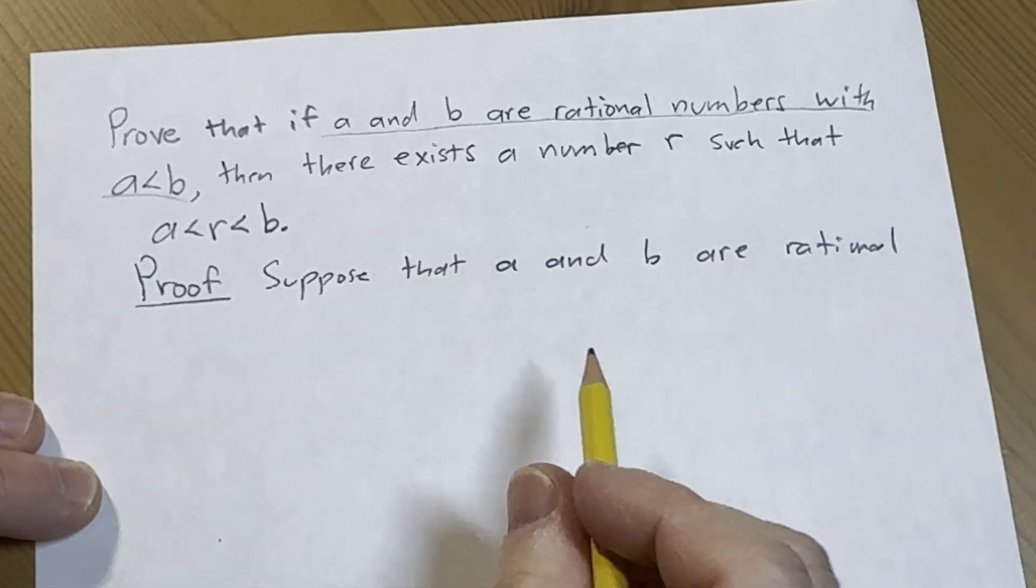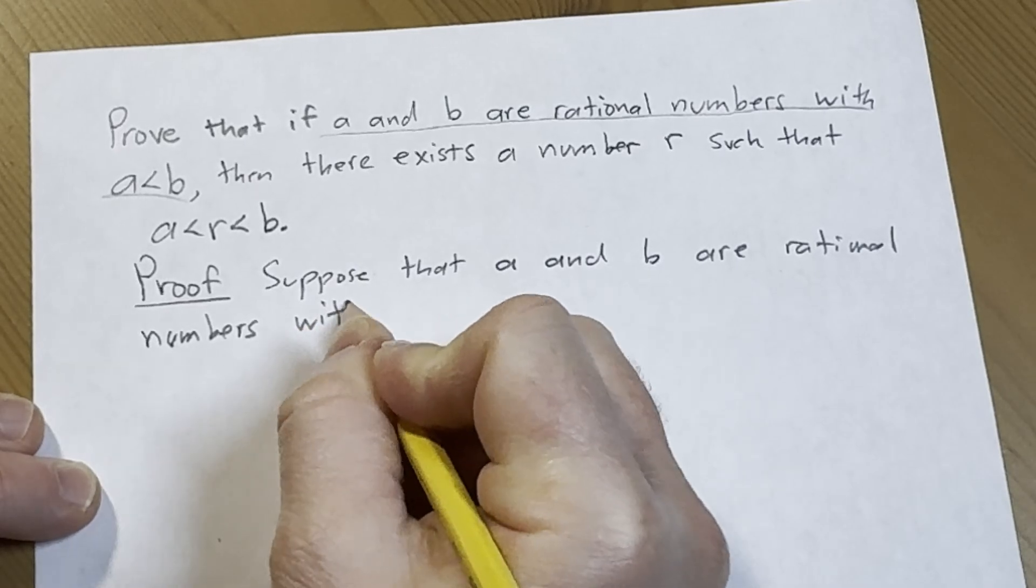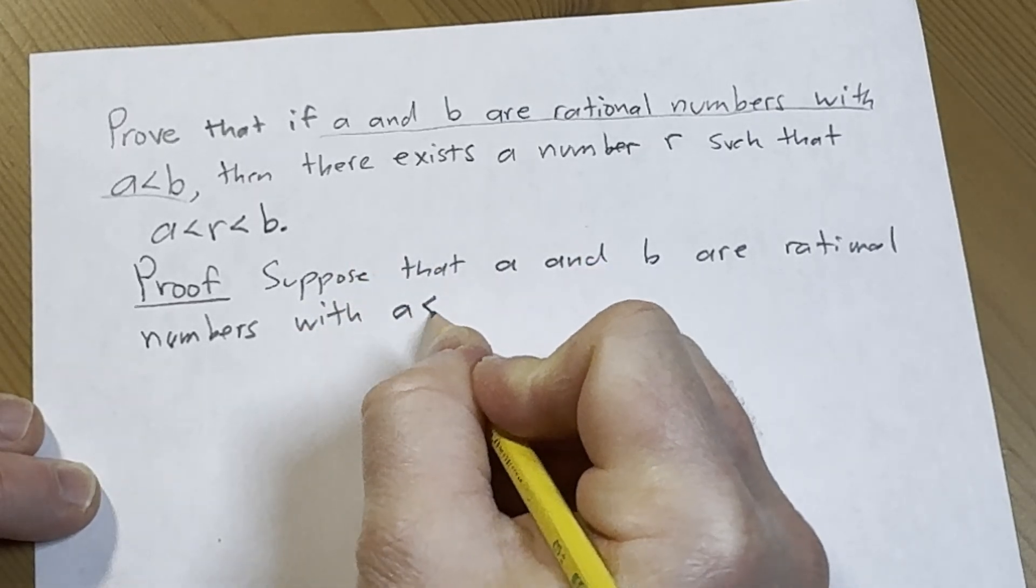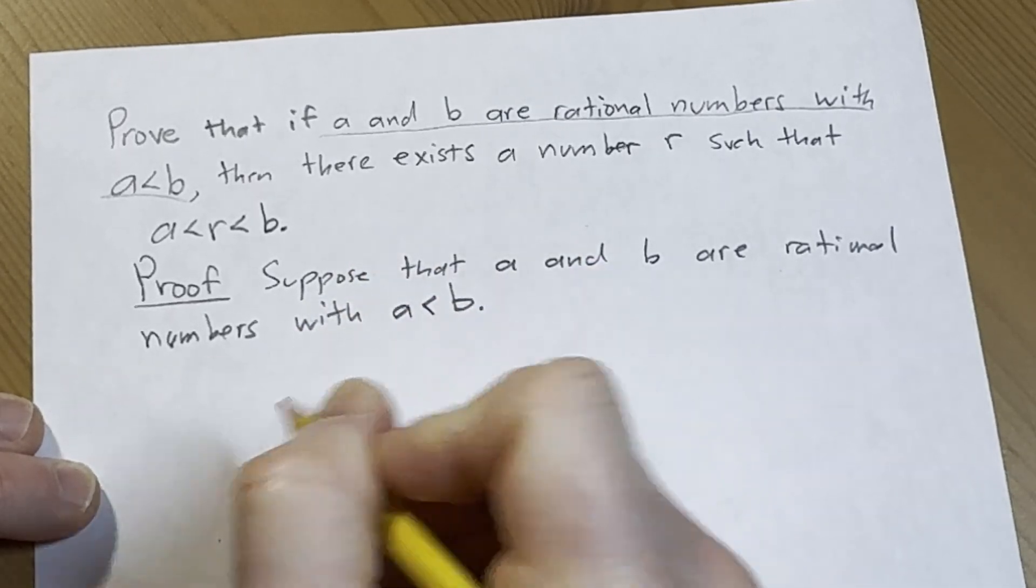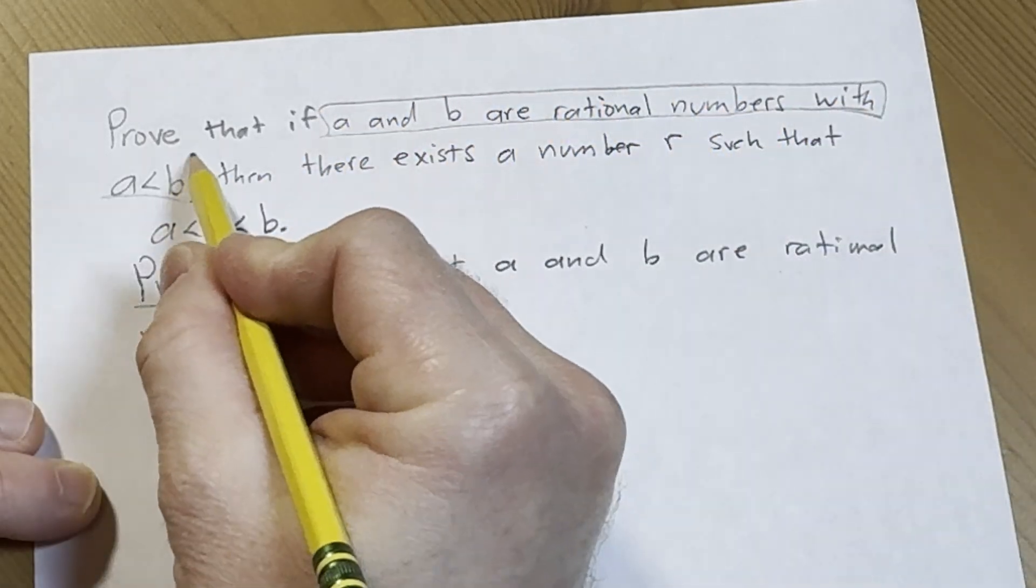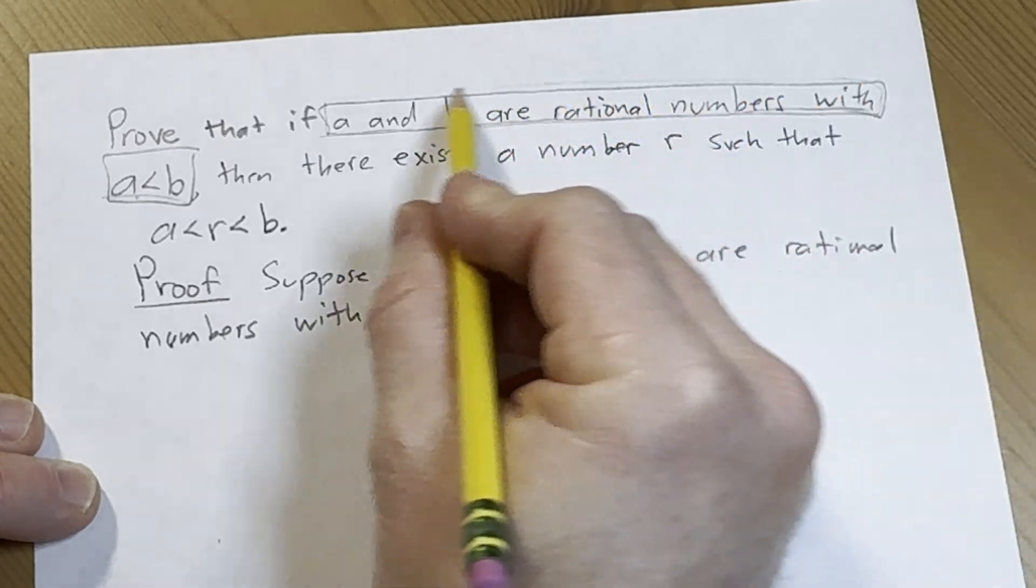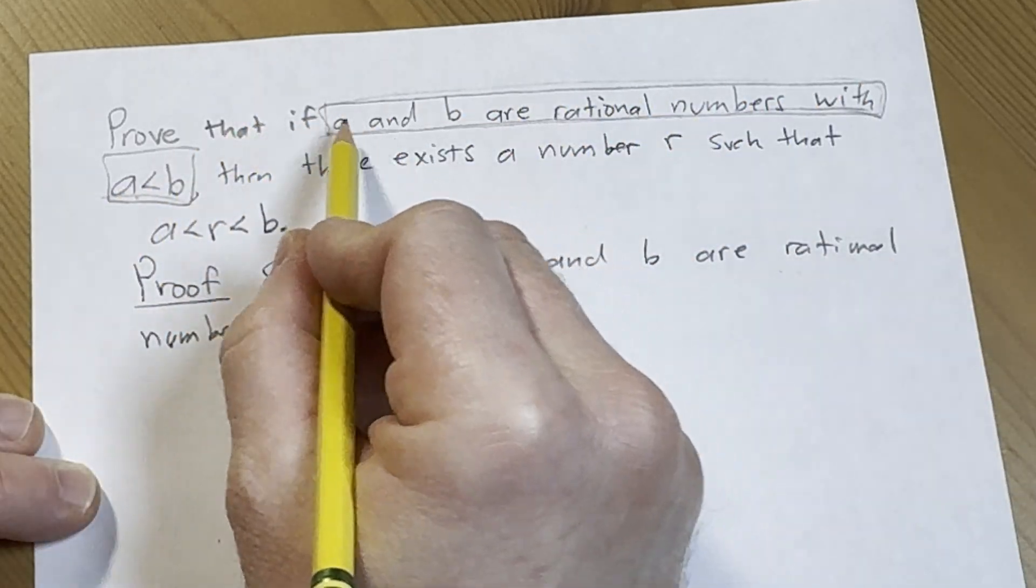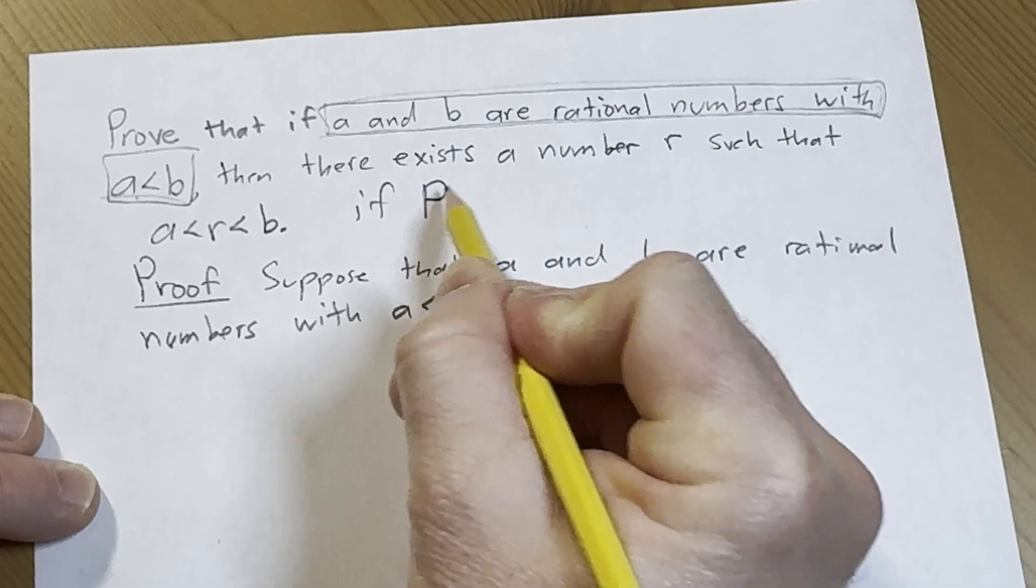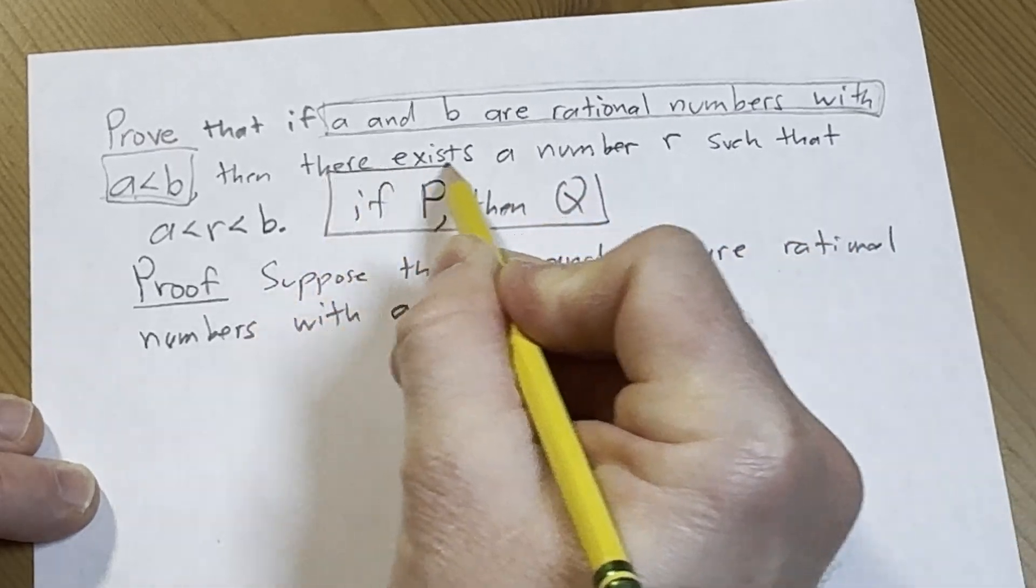...both rational numbers with a less than b. Okay so everything after the if, that's what you assume, but before the then. So this piece here when you're writing a proof, this is an if-then proof. It's an if p then q type statement.